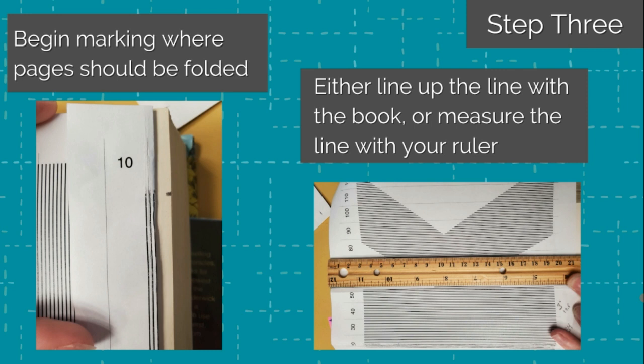For example, the beginning of my K, I had about 40 pages where the pages would need to be folded in the same place. So I measured out that each should be marked at 3 centimeters and 19 centimeters. Then used my ruler to measure on the book, instead of folding or cutting the template itself.